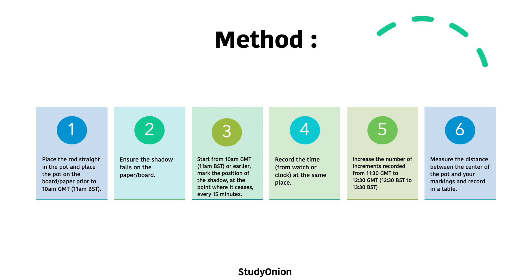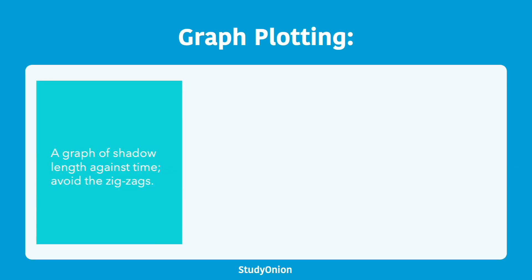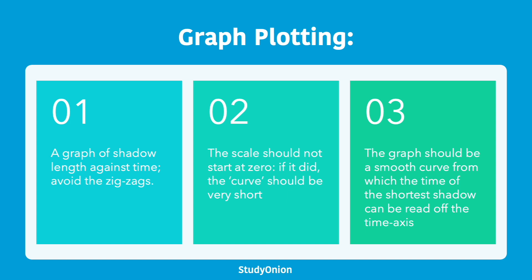When plotting the graph, use shadow length against time. Avoid zigzags — try to make it as smooth a curve as possible. Also, the scale for the shadow length should not start at zero, because if it did, the curve and steepness of the graph would be very short, making it incredibly difficult to accurately determine the shortest shadow. The graph should be a smooth curve from which the time of the shortest shadow can be read off the time axis.